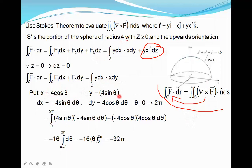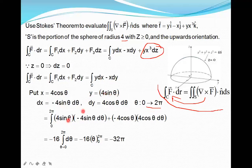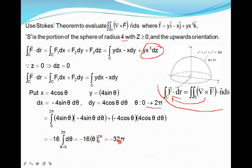With x equal to 4 cos theta, dx equals minus 4 sin theta d theta. With y equal to 4 sin theta, dy equals 4 cos theta d theta. The limits of theta are 0 to 2 pi. Substituting into the integral of y dx minus x dy: y is 4 sin theta, dx is minus 4 sin theta d theta; minus x is minus 4 cos theta, dy is 4 cos theta d theta. This gives 4 times minus 4 equals minus 16 for each term. Taking minus 16 as common, we get sin squared theta plus cos squared theta equals 1. So we integrate d theta from 0 to 2 pi, giving minus 16 times 2 pi, which equals minus 32 pi.